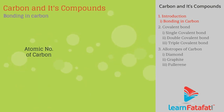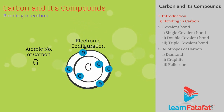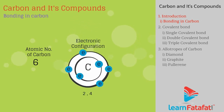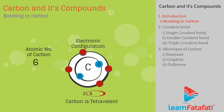The atomic number of carbon is 6. The electronic configuration of carbon is 2-4, meaning the outermost shell has 4 electrons. Hence, carbon is tetravalent.